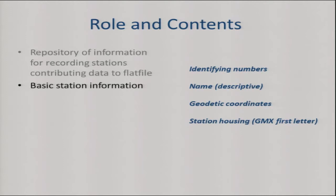Geodetic coordinates — latitude and longitude — are reported to as many significant digits as we can. In many cases, there are more precise locations than we had in NGA West 1. We also record station housing, using codes — the Geometrics first letter — to indicate whether it's a free-field hut, at the bottom of a small building, on the abutment of a dam, and so on.